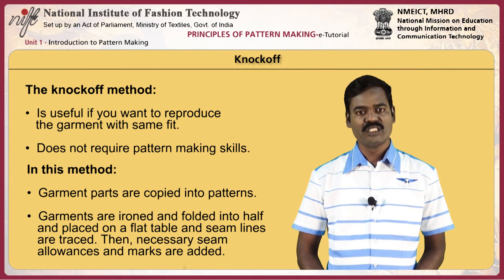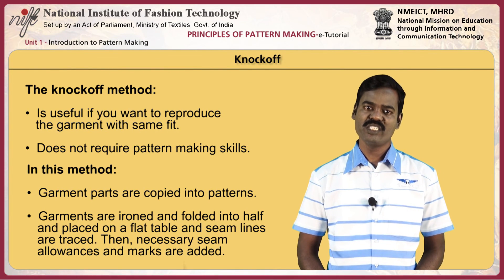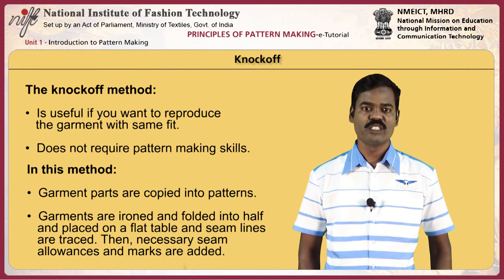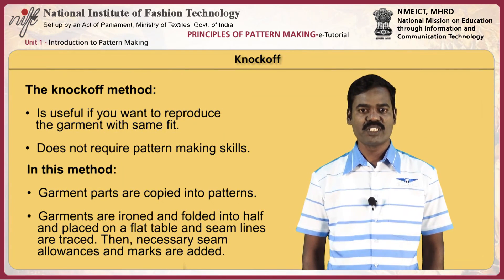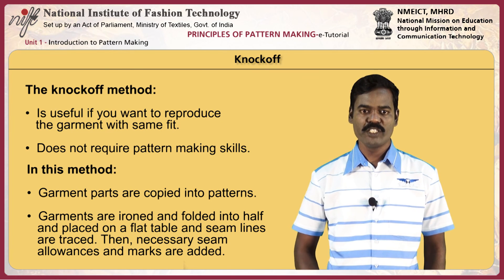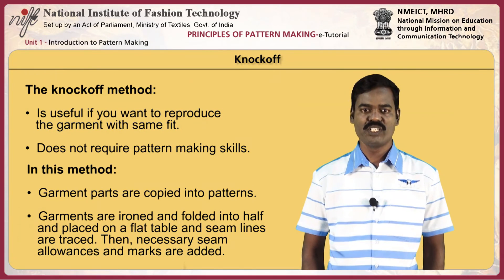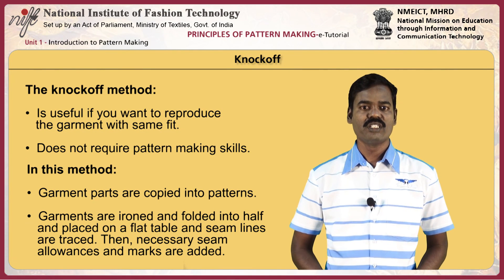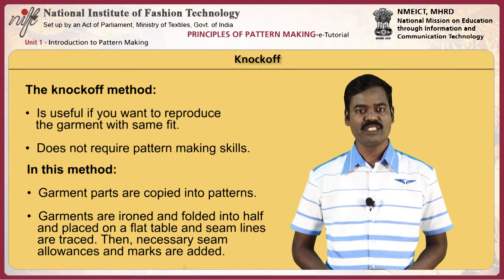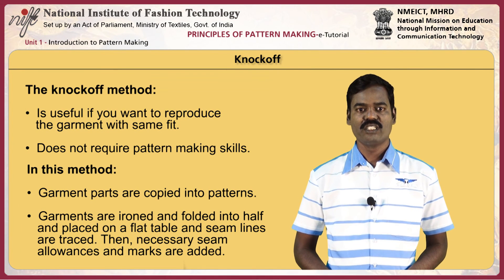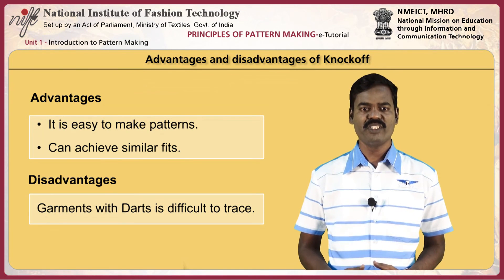The knock-off method is useful if you want to reproduce a garment with the same fit and does not require any pattern making skills. In this method, garment parts are copied into patterns. Garments are ironed, folded in half, and placed on a flat table. Seam lines are traced, and necessary seam allowances and marks are added later. It is easy to make the patterns and can achieve similar fits.